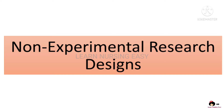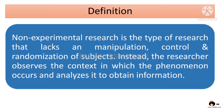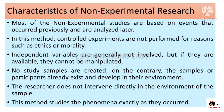We have already dealt with the true, quasi and pre-experimental research designs. In non-experimental research designs, the criteria of control, manipulation, and randomization are lacking. So whenever we want to do a study where we cannot manipulate the subjects, nor control or follow randomization procedures, we use non-experimental research. In definition, non-experimental research is a type of research where there is no manipulation, control or randomization of subjects. Instead, the researcher just observes the context of the phenomena, analyzes it, and gives the information.